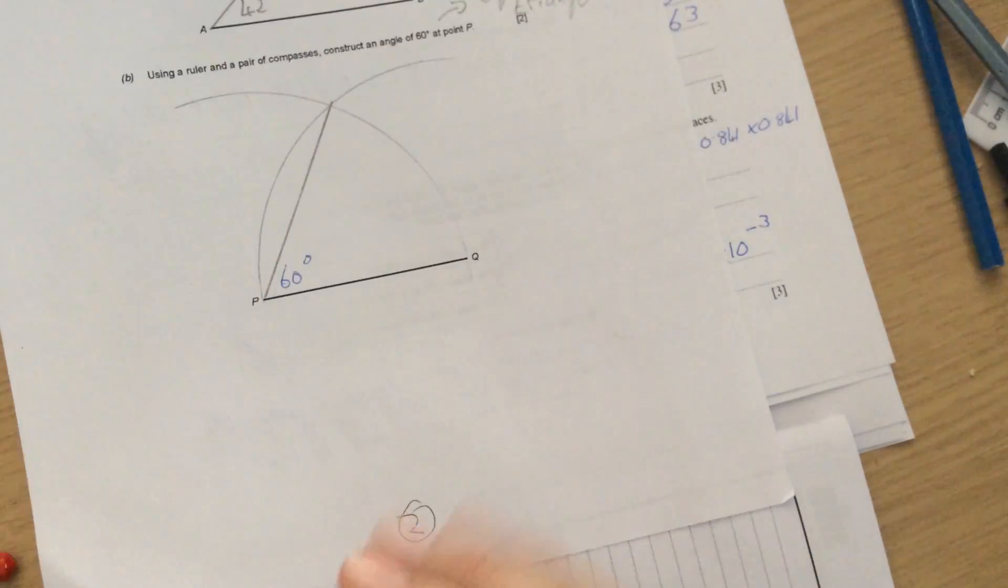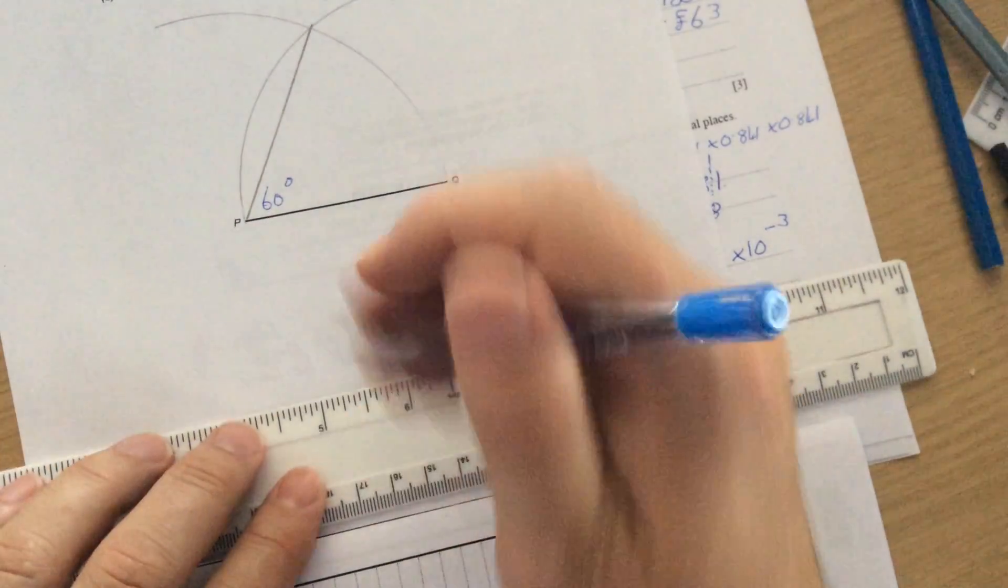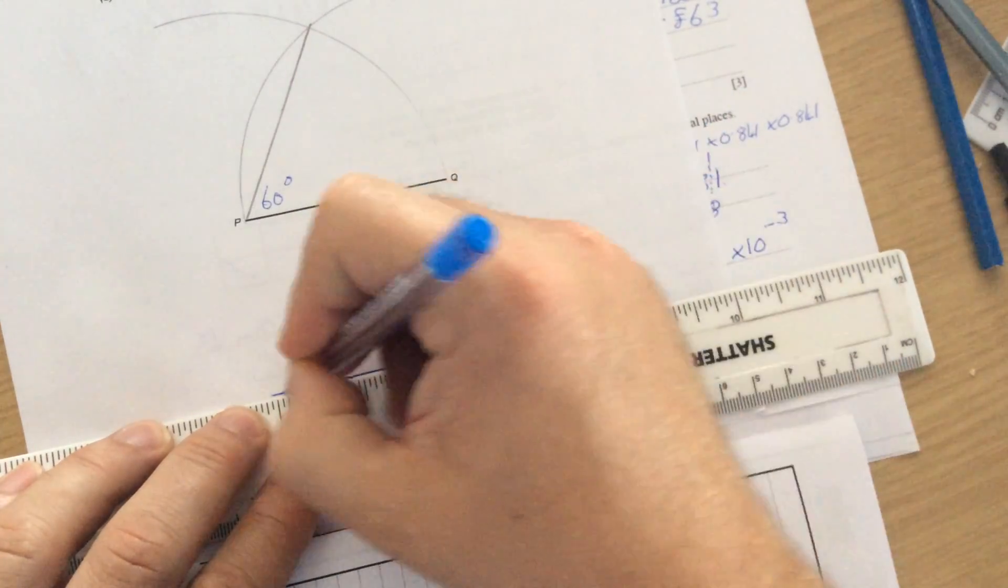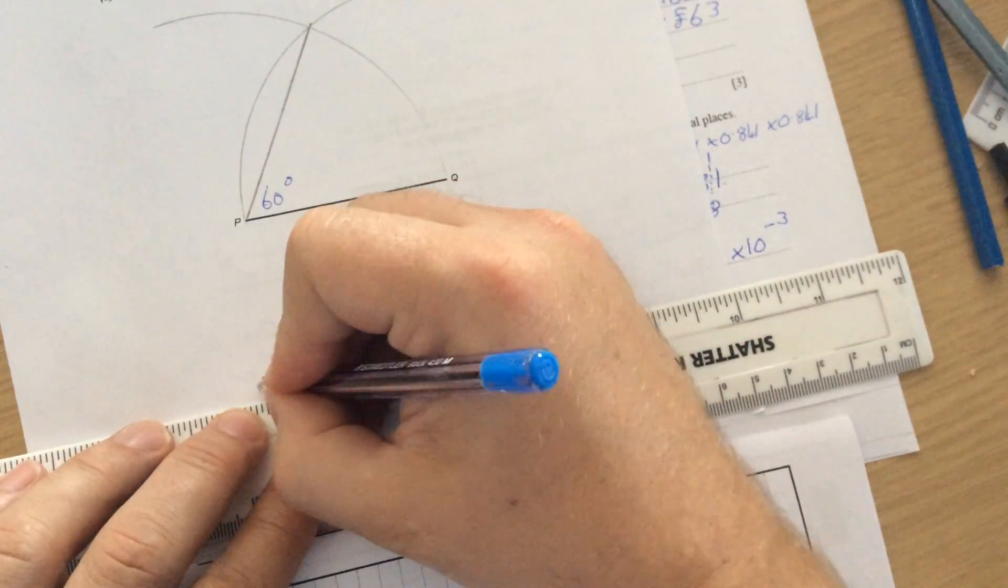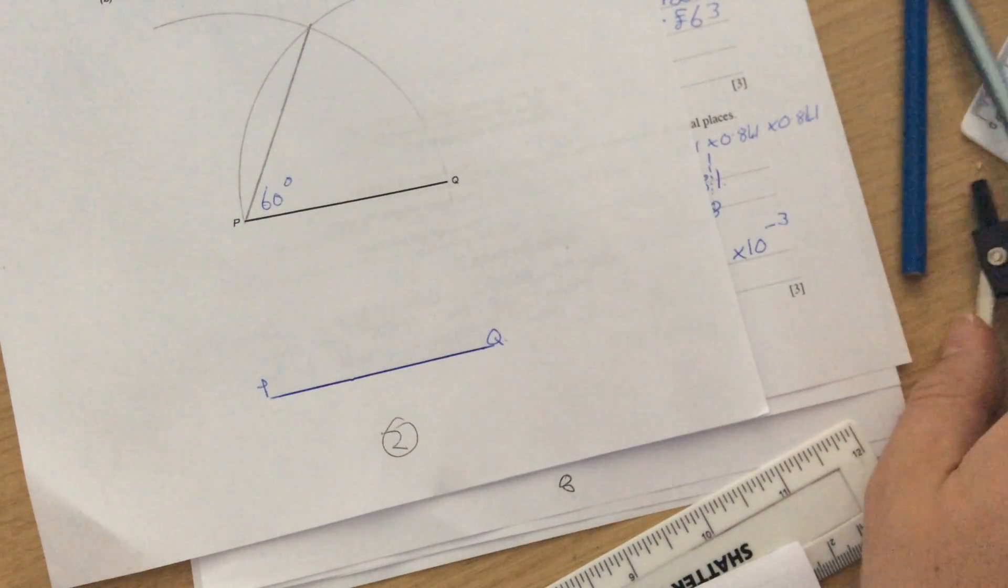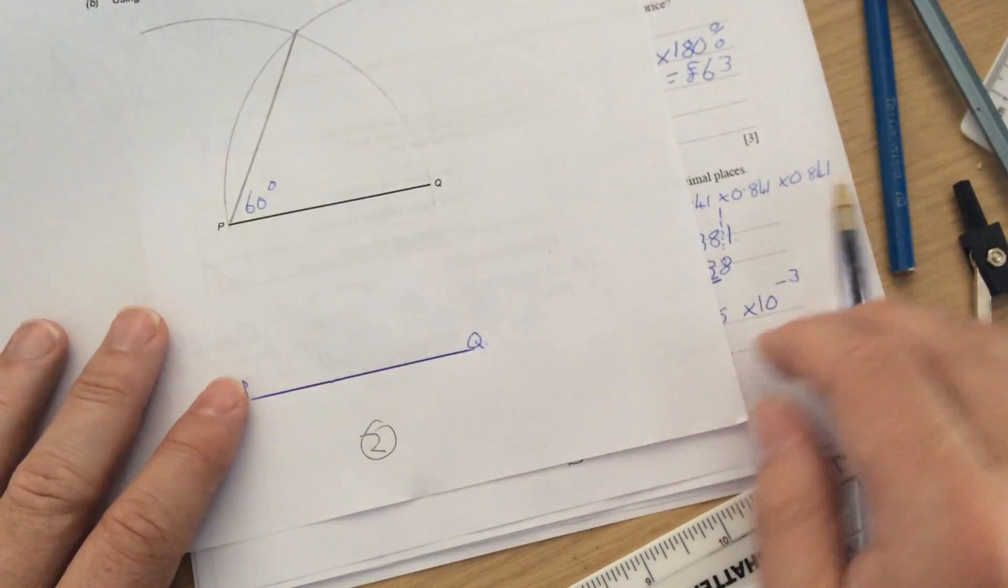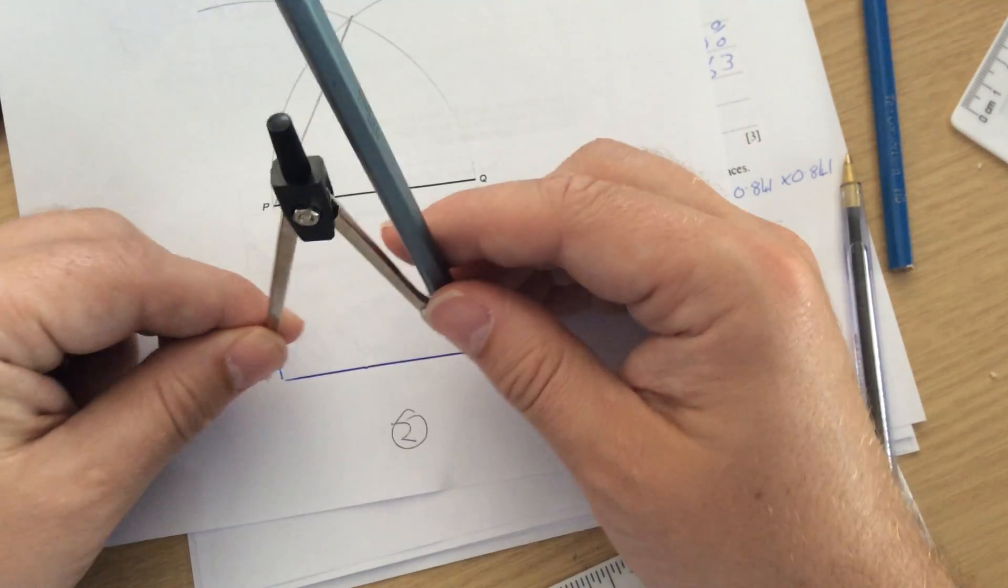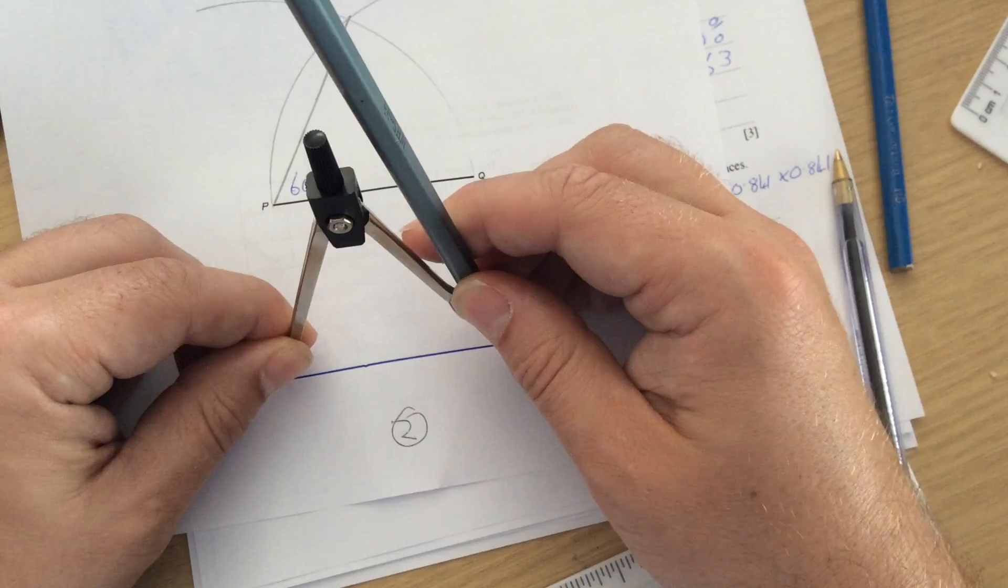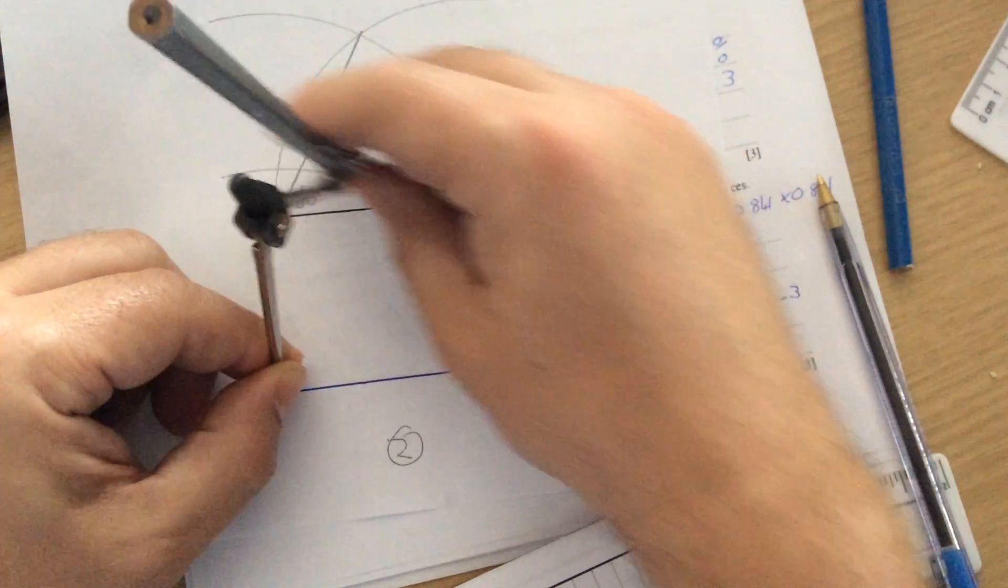Use the ruler and the pencil to construct an angle of 60 degrees at P. So imagine this was my shape at the bottom now, P, Q. What you need to do at 60 degrees, you should be aware, is an equilateral triangle. So what you would need to do, whatever the length of your side is, put your compass point on P, open it up to the point of Q, and draw like an arc of a circle.